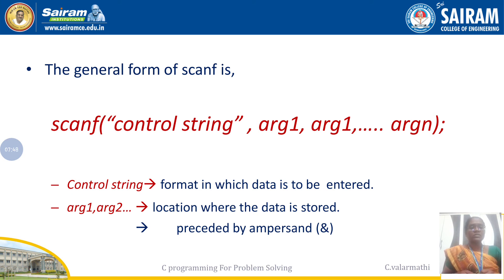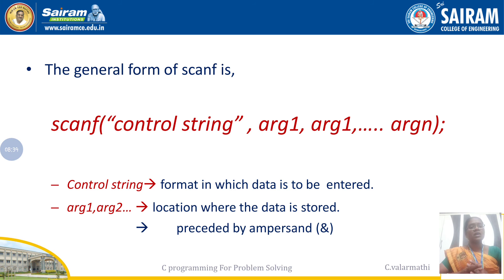What is meant by control string? Control strings consist of format identifiers. To read an integer, use %d. To read a floating point value, use %f. To read a character, use %c. These format specifiers must be included in the control string. The argument list contains the variable names — how many variables you are going to read — and each variable in the argument list must be preceded by the ampersand (&) symbol.